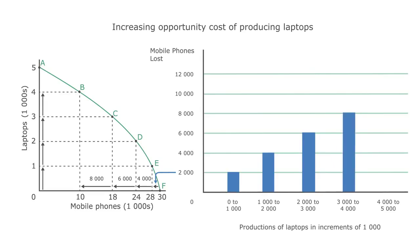You can see that the initial opportunity cost of producing one thousand laptops was relatively small — only two thousand mobile phones. But the final opportunity cost of raising production of laptops from four thousand to five thousand is ten thousand mobile phones. By the time the production of laptops reaches five thousand, there are not enough resources to produce any mobile phones.